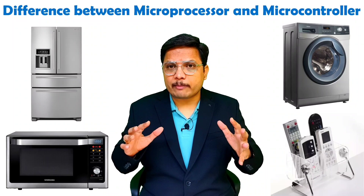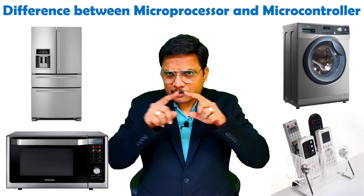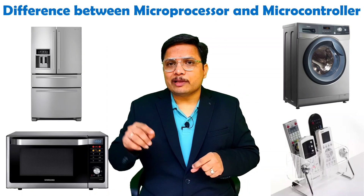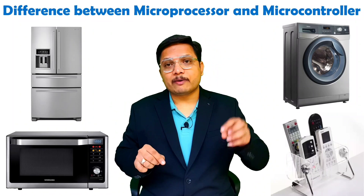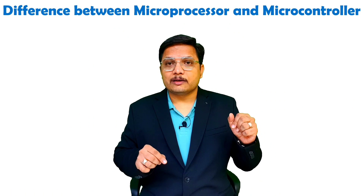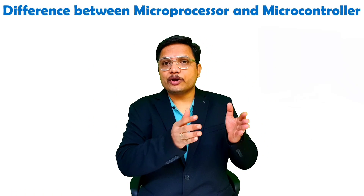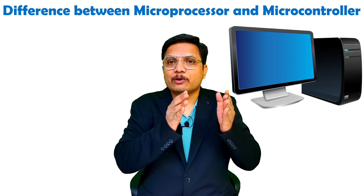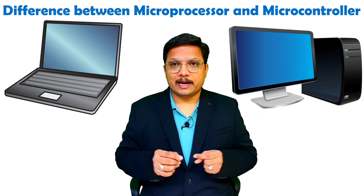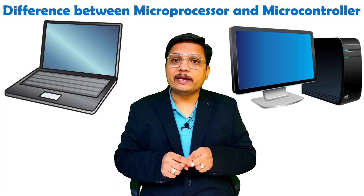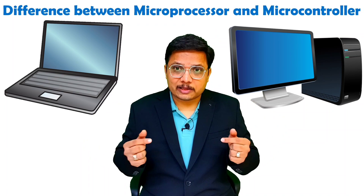In those types of embedded applications, we have a microcontroller in which all the elements — like ROM and RAM — are there on-chip. But when we talk about microprocessor, it is used for general purpose, like for your desktop or laptop. With a microprocessor, we interface memories as well as IO ports externally.